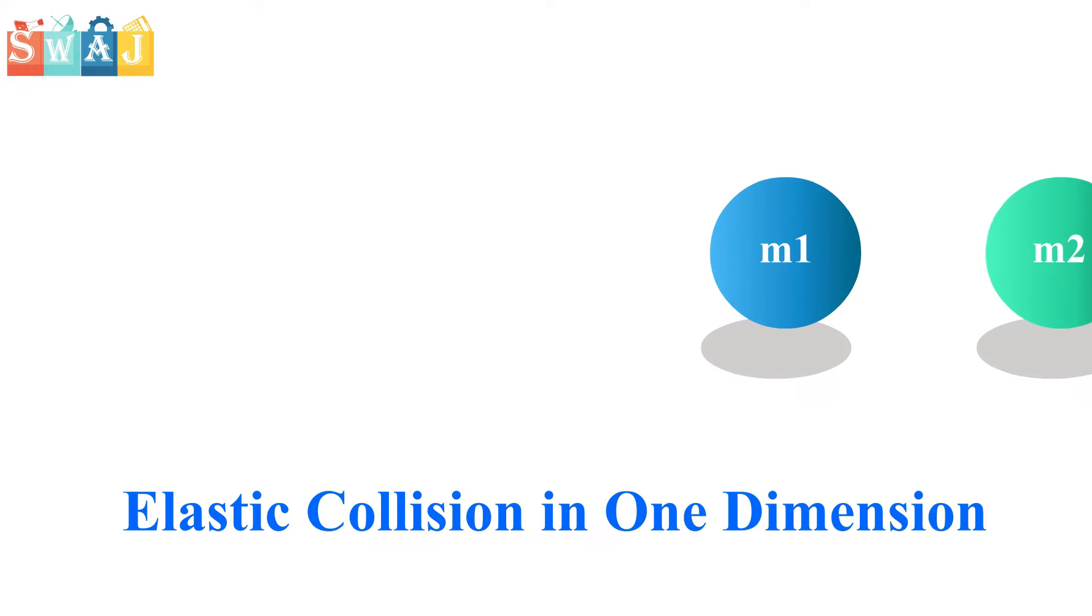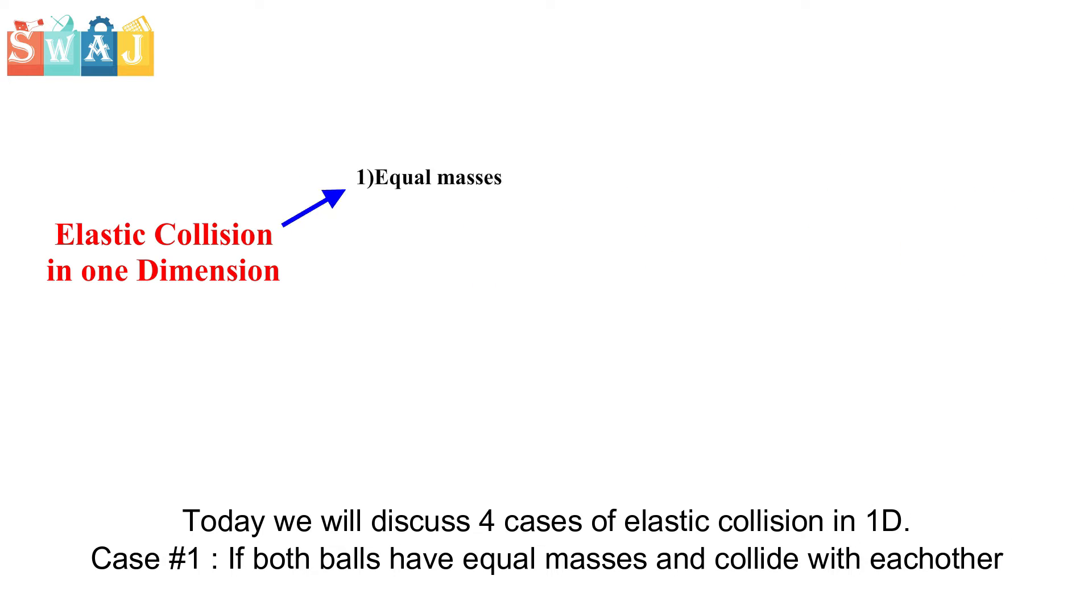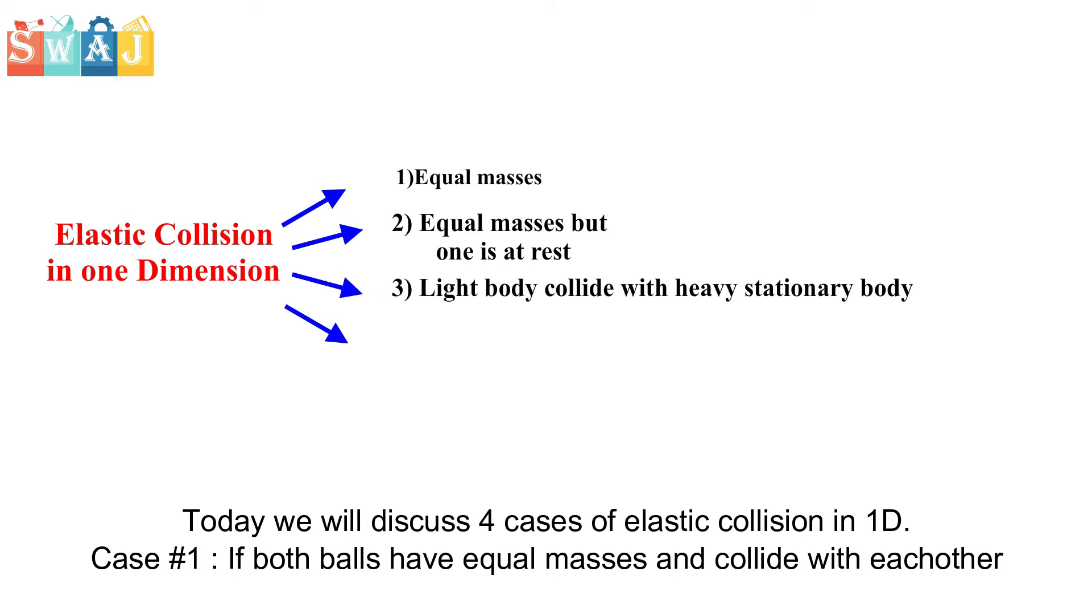Elastic collision in one dimension. Consider two smooth, non-rotating balls of masses M1 and M2 moving with initial velocities V1 and V2 in the same direction. Today we will discuss four cases of elastic collision in one dimension.